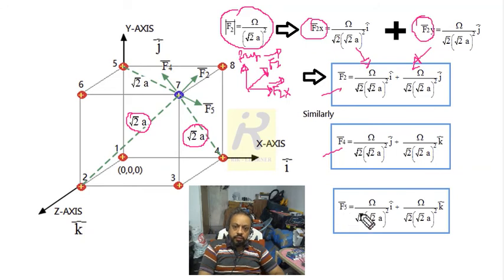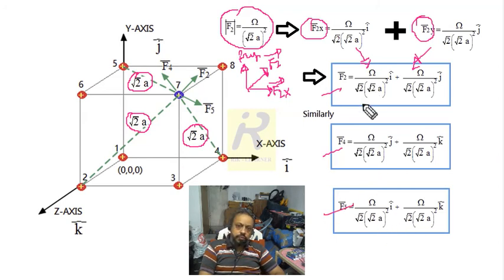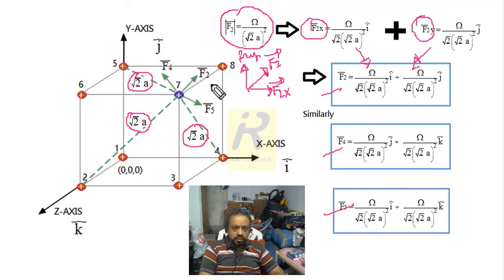F₅ can also be written similarly: charge #5 is at distance √2·a from charge #7, and the force acts along that face diagonal. So we now have the collection of forces F₂, F₄, and F₅. We have now accounted for six charges: #3, #6, #8 (adjacent) and #2, #4, #5 (face-diagonal). One more charge remains — charge #1.